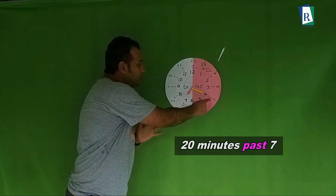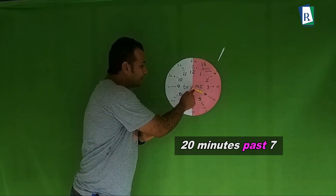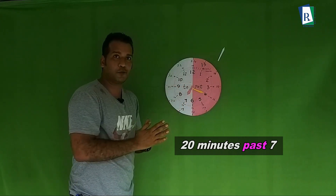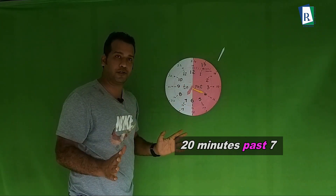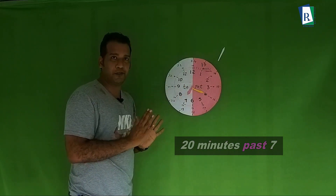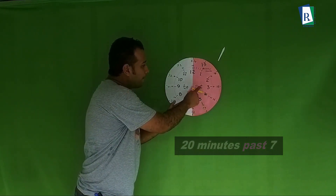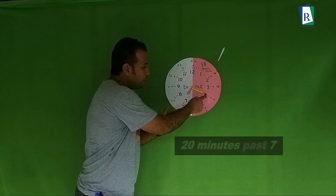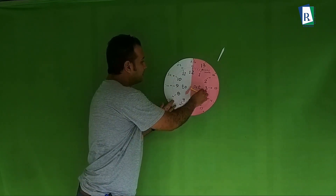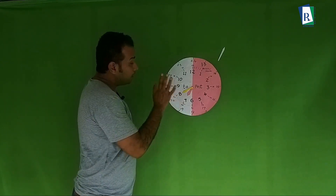That means twenty minutes past seven. The word 'past' and 'to' are used with the minutes, not with the hours. So twenty minutes past seven — this is the time. Now let me check another example, changing only the minute.